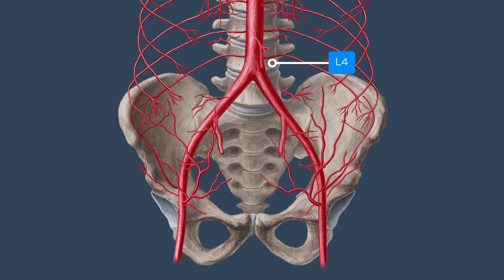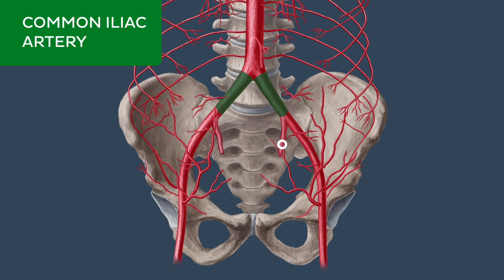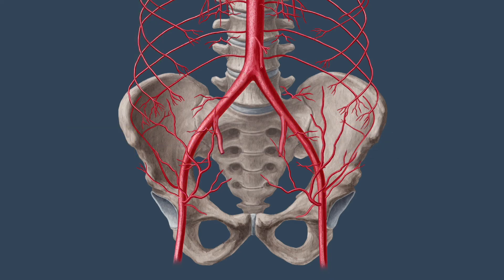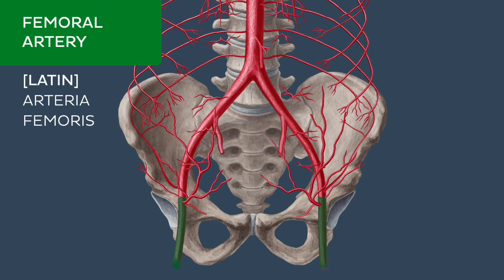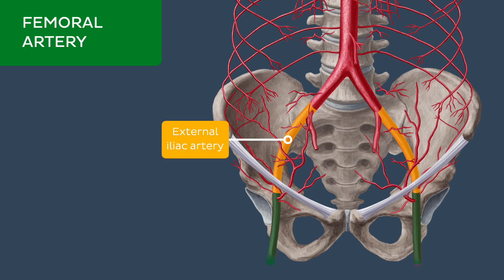At the lower level of vertebra L4, the descending aorta divides into the right and left common iliac arteries. The common iliac arteries further bifurcate to form internal and external iliac arteries. The external iliac artery descends towards the thigh where it becomes known as the femoral artery at the level of the inguinal ligament. The external iliac and femoral arteries provide numerous branches which supply the lower portion of the abdominal wall.